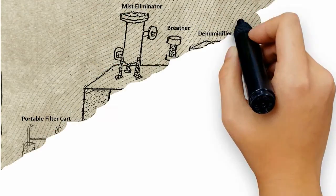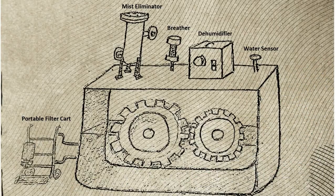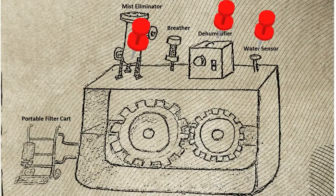2. Use, as needed, online filters on machines, sensors for measuring the moisture, dehumidifiers, vapor eliminators, good quality desiccant breathers, and offline filtration.